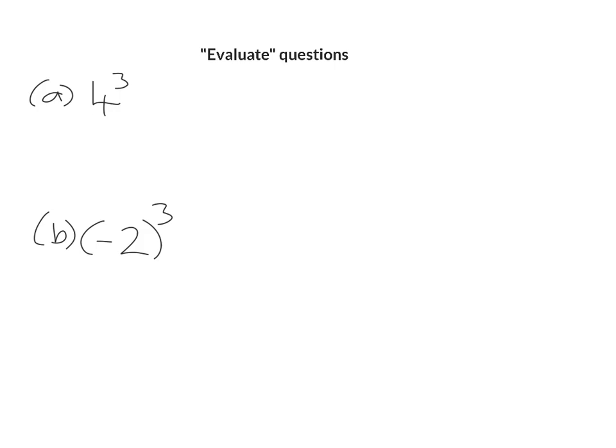These questions should be a revision of your GCSE work. So start with a nice basic one: 4 cubed is just 4 by 4 by 4, which is 64.